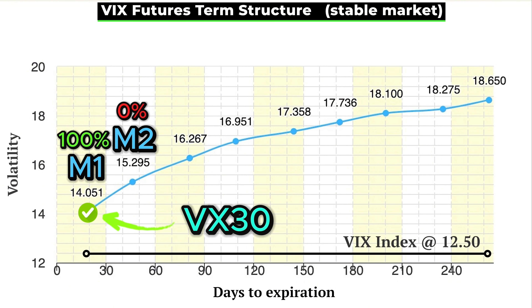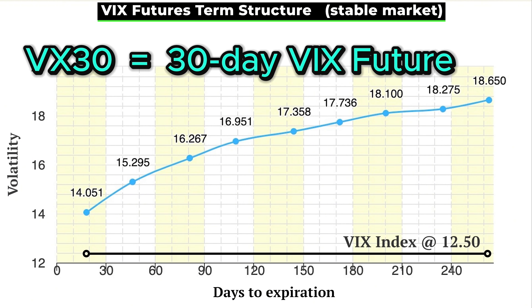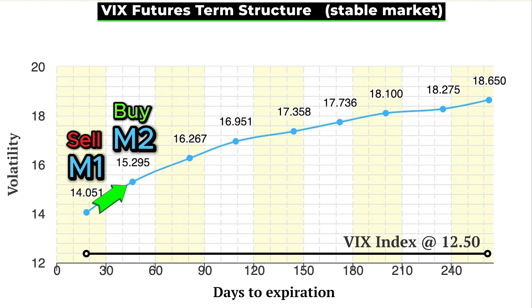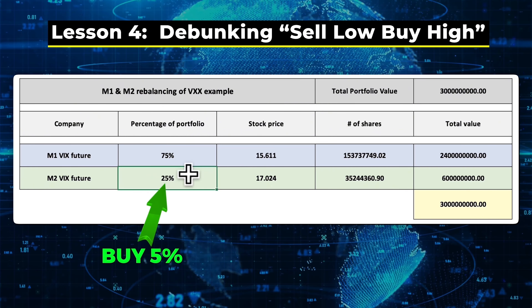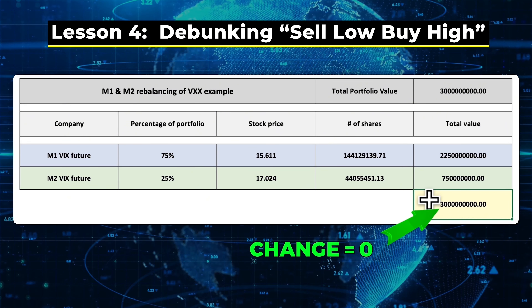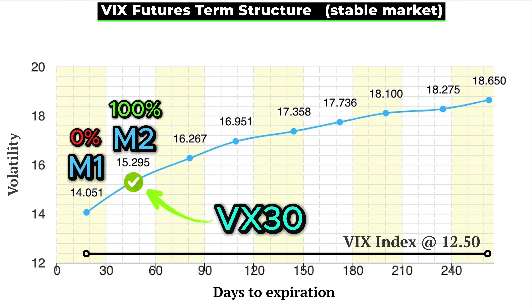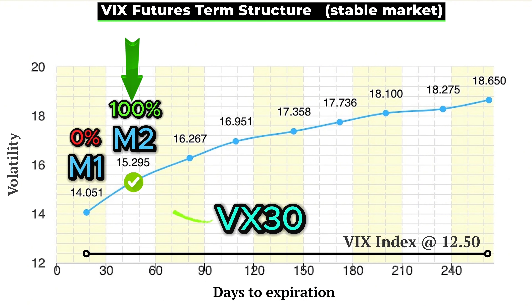At the beginning of the cycle with lots of time left to expiration, VX30 will basically be all of the front month M1 future and none of the back month M2 future. But as time goes on, to maintain that 30-day constant maturity, every day they have to rebalance a little bit to the back month by selling some M1 and buying some M2. Importantly — and this was lesson four in the course — that rebalancing itself causes no price change at all; it's all done at a net zero transaction. But by the end of the monthly cycle, because of that rebalancing, VX30 will be entirely made up of the back month M2 future.